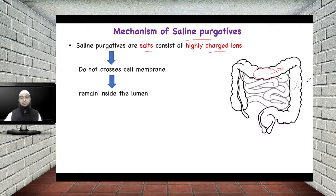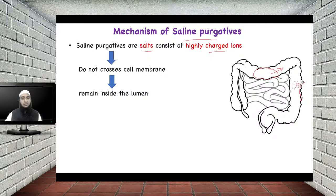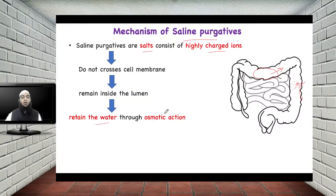They remain inside the lumen. Since you have given saline purgative, they create a hypertonic environment where the concentration of salt is more in the lumen as compared to the concentration of salt present in the cells. For example, if this is the membrane of the intestine, the intestinal membrane has cells with some amount of salt present at isotonicity. When there is more concentration of salt in the lumen, it will withdraw water from the cell into the lumen, and as a result, it retains the water through osmotic action.